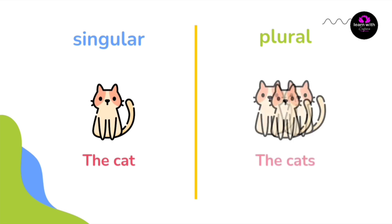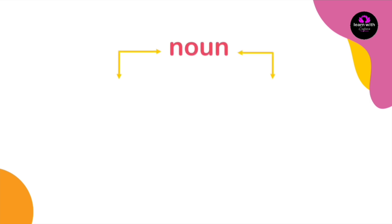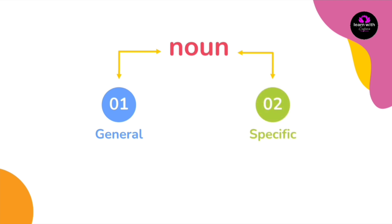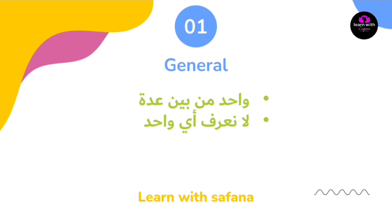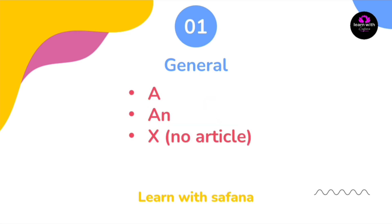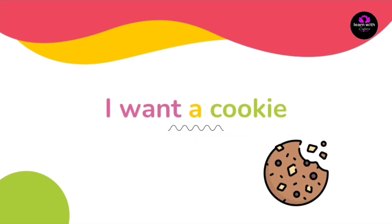the cat — مثال للـ singular مع the. ايضا الـ nouns تنقسم نوعين اخرين: النوع الاول general شيء عام، والنوع الثاني specific شيء محدد. الـ general يكون واحد من بين عدة اشياء ولا نعرف اي واحد — في هذه الحالة نستعمل a، an، او no article. على سبيل المثال: I want a cookie — ابغى cookie واحدة، شيء واحد من بين اشياء.